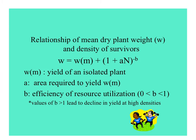There's a relationship between how big a plant gets and how many plants are present in that area. If Wm is the yield of an isolated plant, and A is the area required to yield that maximum, then the relationship of the density of survivors and mean plant dry weight is given by this equation. The term B, raised to the negative B power, is the efficiency of resource utilization from zero to one. If B is greater than one, there's a decline in yield at high densities.